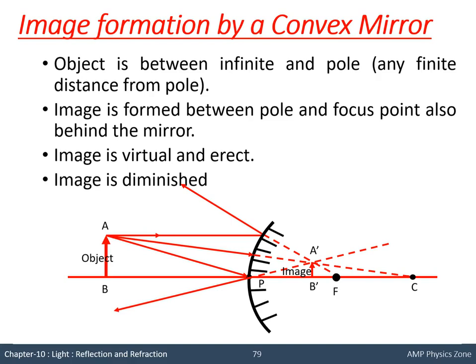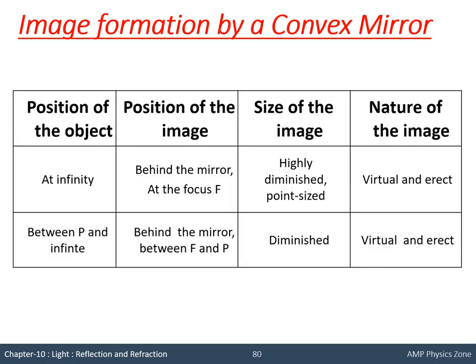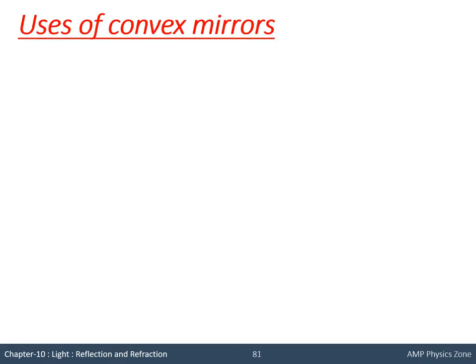The three key points to remember for a convex mirror: First, the image formed will always be diminished. Second, the image formed will be between P and F, or at maximum at F. Third, the image formed will always be virtual and erect. These three points apply to both cases. You can view the summary table which covers what we have discussed — the same things are written there. Now we move on to the uses of a convex mirror.